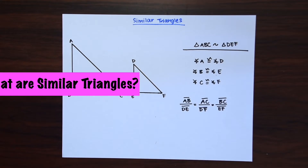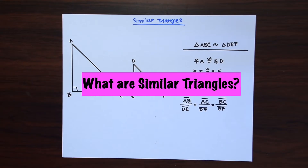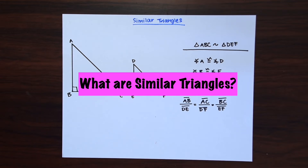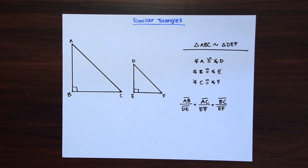Let's first go over what similar triangles are. Triangles are similar to each other when they have equal angles and proportionate sides. The triangles can be bigger or smaller, but as long as they have the same exact angles and the sides are in proportion, they are similar.